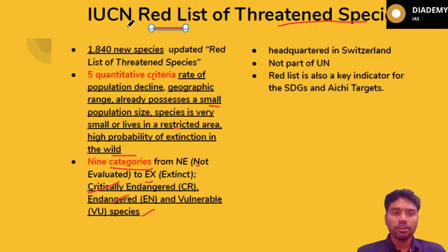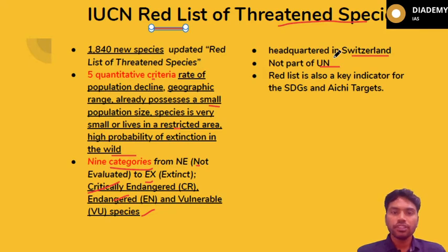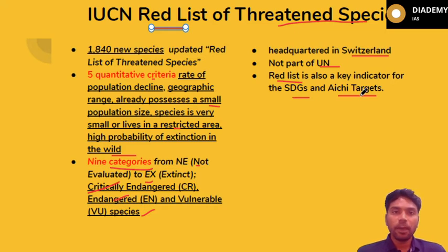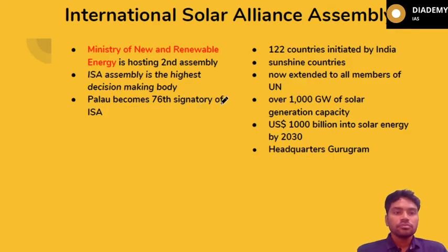Regarding extra points on IUCN: its headquarters is in Switzerland. Importantly, IUCN is not a part of the UN — UPSC tends to ask questions about whether a particular organization is part of the UN or is a regional institute, so please note the nature of each organization. The Red List is also a key indicator for Sustainable Development Goals and the Kunming-Montreal (KM) targets, which are part of the Convention on Biodiversity.